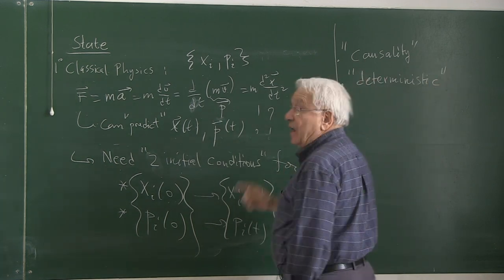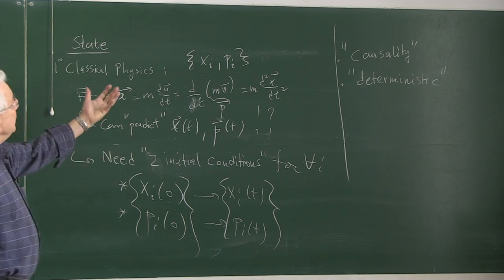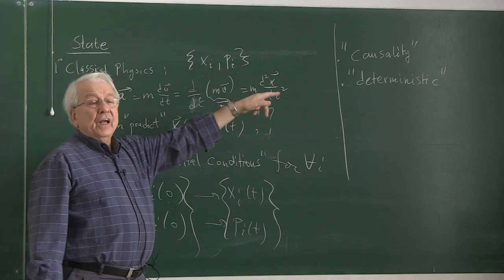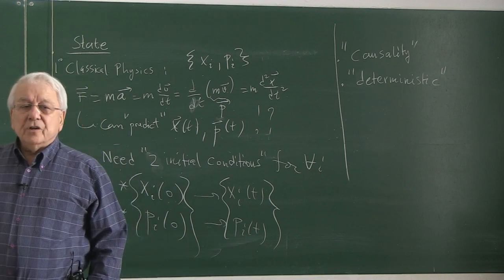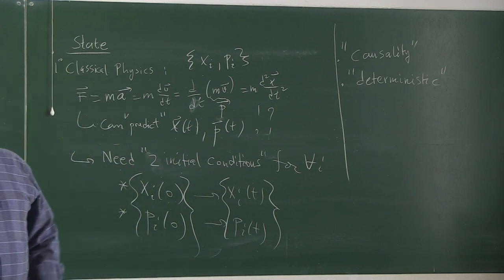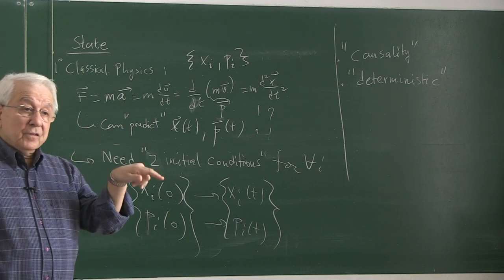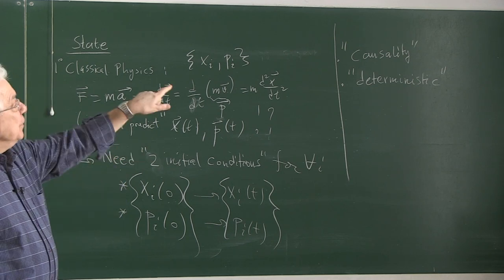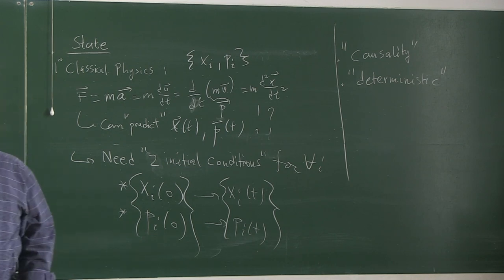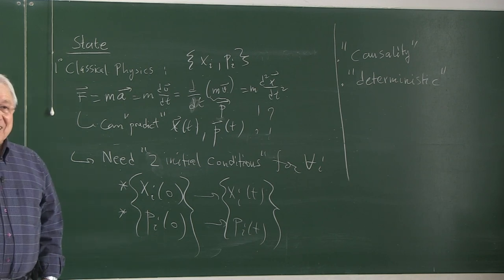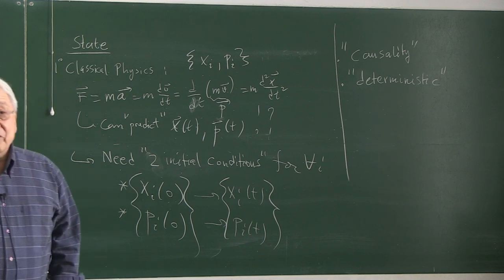Classical physics is also deterministic. I can answer any question — if I have that information in hand, I can answer any question about the system. I can tell you what the energy will be at a future time, what the angular momentum will be, and so on. Any question you can ask about the system is answered with that information. That's full, complete, precise information — that's why I call it state.